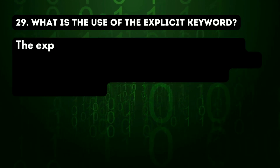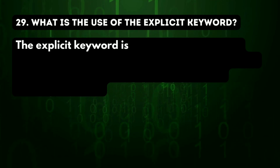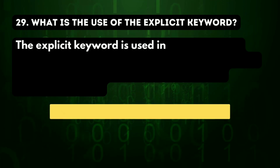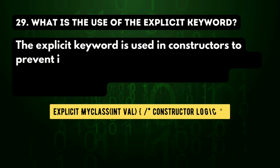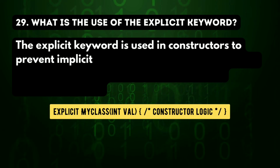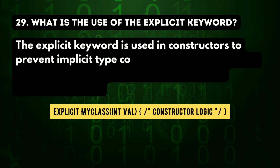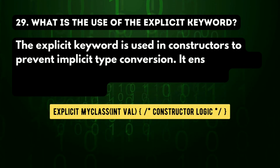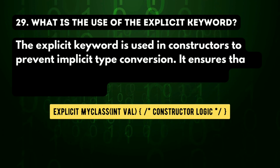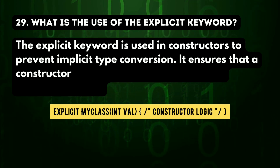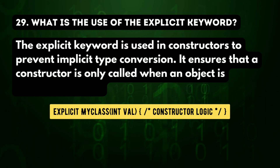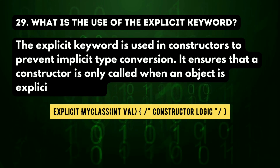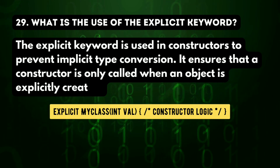29th question: what is the use of the explicit keyword? The explicit keyword is used in constructors to prevent implicit type conversion. It ensures that a constructor is only called when an object is explicitly created.